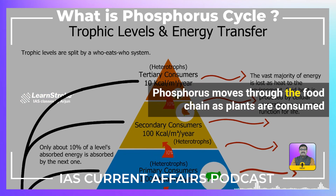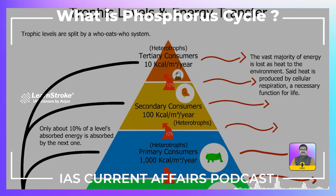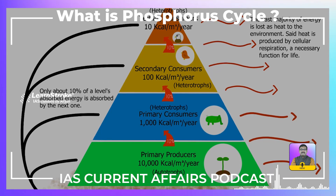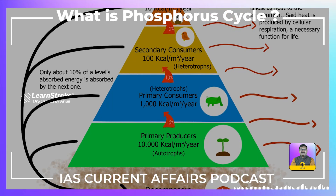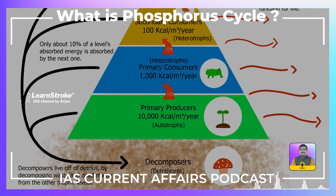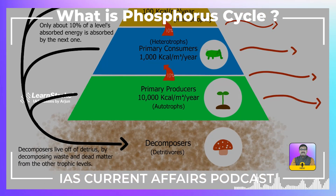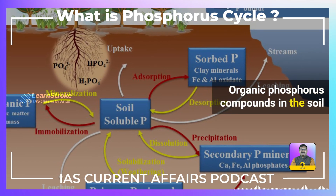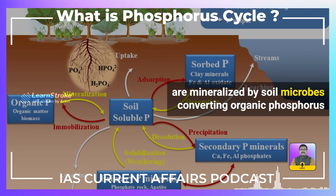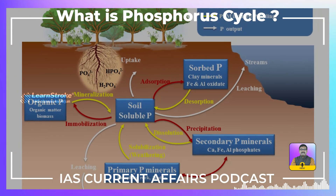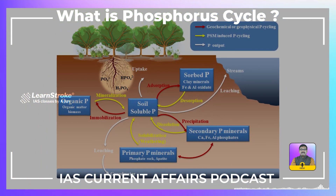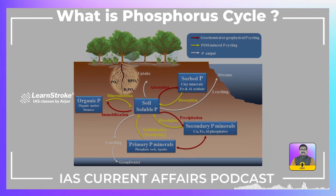Phosphorus moves through the food chain as plants are consumed by herbivores, which are then eaten by carnivores and other higher trophic organisms. Phosphorus is incorporated into the tissues of organisms at each trophic level. Organic Phosphorus compounds in the soil are mineralized by soil microbes, converting organic Phosphorus into inorganic forms such as phosphate ions, which are then available for plant uptake.